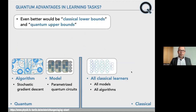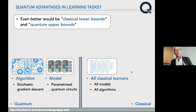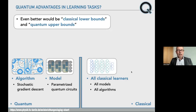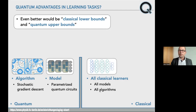Even better — and I'm still young enough to dream — the dream would be to think of classical lower bounds on one hand and quantum upper bounds on the other and compare the two. We'd be very specific on the quantum side, thinking of a specific algorithm like stochastic gradient descent, a model like parameterized quantum circuits with knobs tuned by a classical algorithm, and a specific architecture. But compare this with a very forgiving and general classical setting — all classical learners, all models, all algorithms — and ask: can this specific quantum algorithm be better than any possible conceivable learner for the same task? That's the dream advantage.